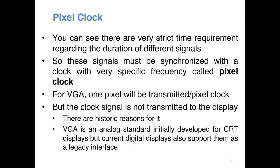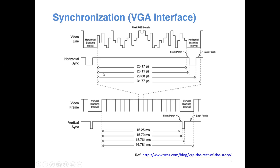There are strict timing parameters for these signals. For horizontal synchronization there is the actual synchronization pulse, plus a front porch period before it and a back porch period after it. These requirements originally came from the CRT era but we still carry over those specifications. Similarly, for vertical synchronization there is also a front porch and back porch.